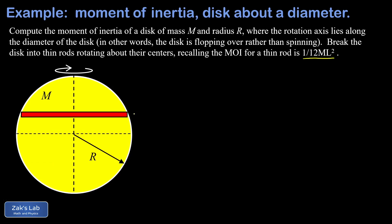Each thin rod gives us an incremental contribution to the mass, called dm — an infinitesimal mass. I also drew a horizontal center line across the disc as a reference for measuring the y-coordinate of dm, so that particular thin rod slice is located at vertical coordinate y. To find how wide the rod is, we know the distance from the center to the end of the rod equals the radius R, so we use the Pythagorean theorem: half the width is √(R² − y²).